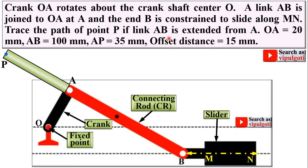One more important point: the offset distance is given to you. This is the center of rotation of the crank, and this is the path of the slider. The distance between these two is called the offset distance, given to you as 15 mm. In the previous two problems, we saw the single slider crank chain mechanism with offset distance 0.